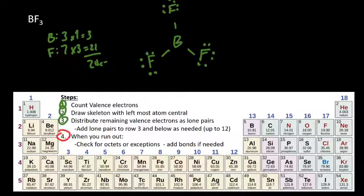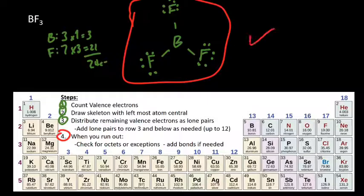Now let's count for octets. Fluorine has eight total electrons. Fluorine's happy, and all those fluorines are the same. Boron has six electrons. So it only has six, it doesn't have an octet. So if boron was a normal atom, this would be where we would go ahead and add bonds. But boron's actually happy without an octet. How many does it want? If you remember from our discussion earlier, it wants six. So that's actually happy. So this is the correct molecule.